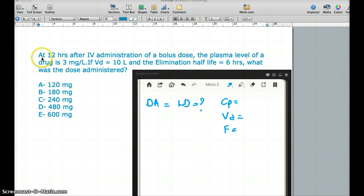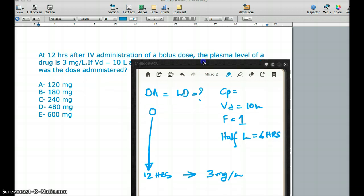At 12 hours after IV administration, IV, so our bioavailability is going to be 1. At 12 hours, so let's say this is 0 hour. At 12 hours, the bolus dose, the administration of a bolus dose, the plasma level of a drug is 3 milligram per liter. So at 12 hours, it's going to be 3 milligram per liter. VD is going to be 10 liter. And elimination half-life, so there is another new information here. Half-life is going to be 6 hours. What is the dose administered? Interesting question, right?